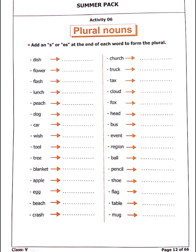Activity 6 is plural nouns. Add an S or ES at the end of each word to form the plural. You are given some singular nouns and you have to add S or ES at the end of the words to make them plural. For example, the first word is dish — you add ES to make dishes. Flower becomes flowers, flash becomes flashes. Similarly, you have to make all the given words plural by adding S or ES.